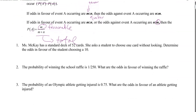Ms. McKay has a standard deck of 52 cards. She asks a student to choose one card without looking. Determine the odds in favor of the student choosing a 10. There are four 10s in the deck, so the number of favorable outcomes is 4. The number of non-10s — unfavorable — is 48. The raw odds are 4 to 48, and when we reduce it — both divisible by 4 — we get 1 to 12. We always express odds with a colon in the middle as a ratio: favorable to unfavorable.